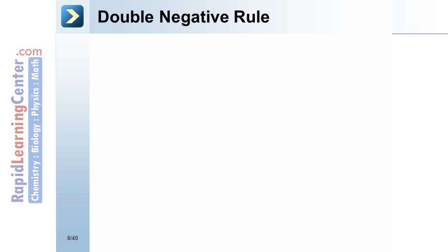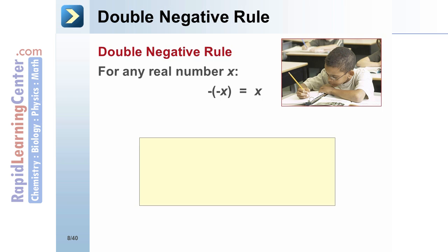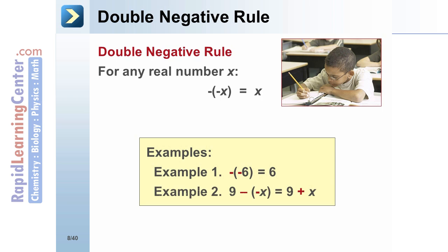Double Negative Rule: For any real number x, the opposite of negative x is x. Example 1: The opposite of negative 6 is positive 6. Example 2: 9 minus the opposite of x equals 9 plus x.